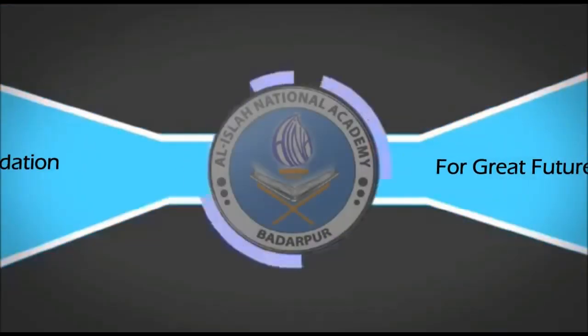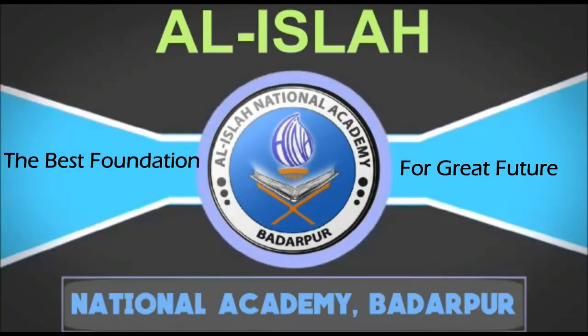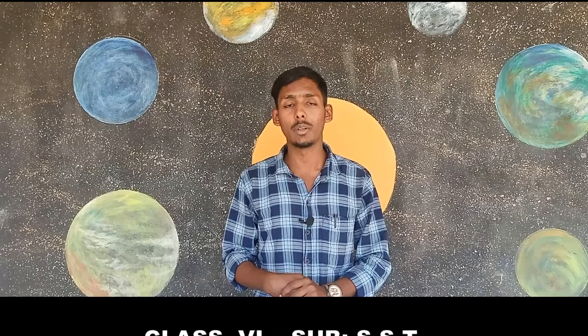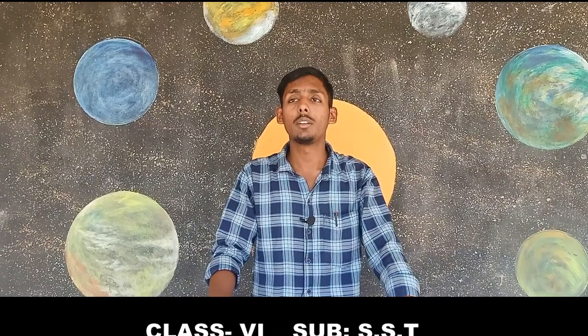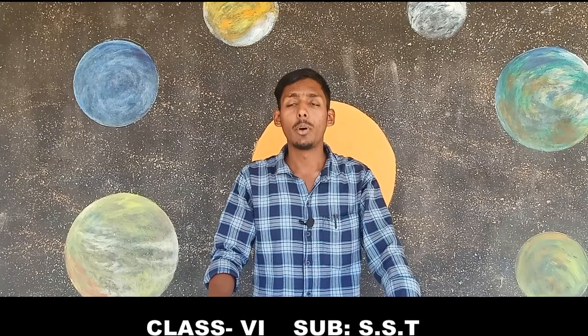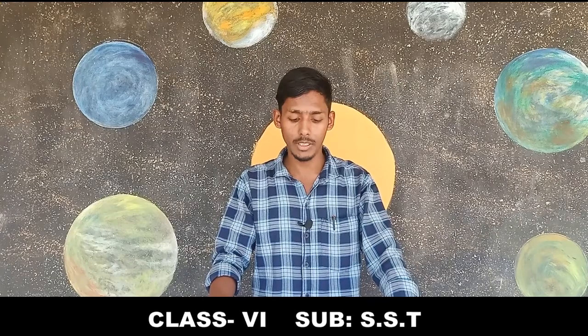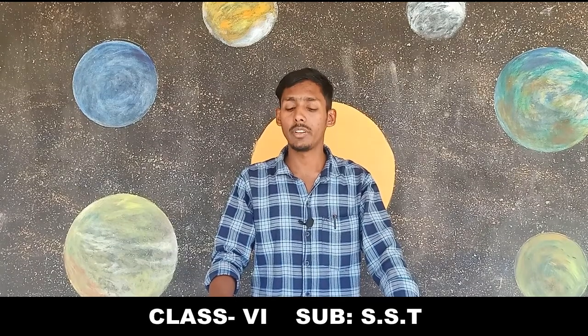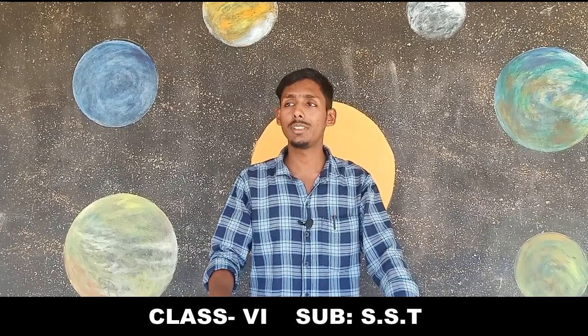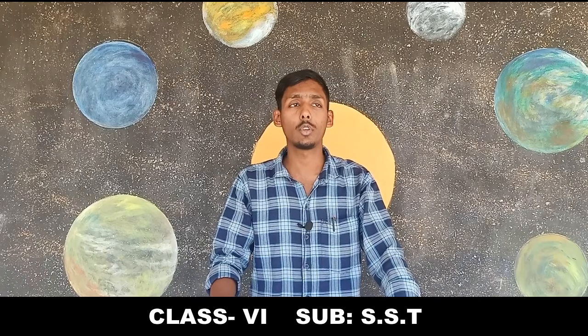Welcome to Al-Isla National Academy, the best foundation for a great future. Today we are going to start a new chapter from the geography section of class 6. The chapter name is 'The Earth in Our Solar System.' In this chapter we will learn about how the universe forms, about stars and constellations, about the sun and solar system, and the last point is about the moon, materials, and the comet.